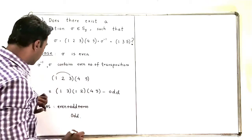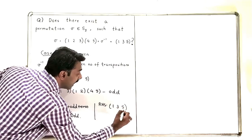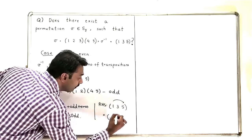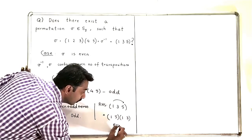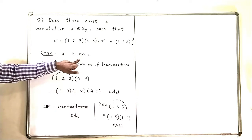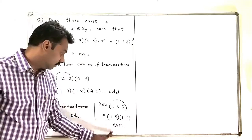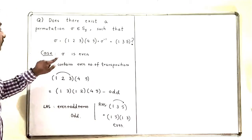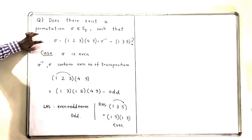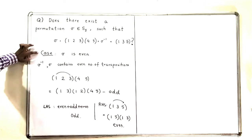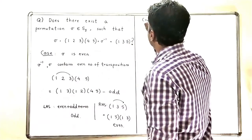Now looking at the right-hand side, (1 3 5) can be written as (1 5)∘(1 3), which uses two transpositions — so it is an even permutation. This means if σ is even, the left-hand side is odd but the right-hand side is even, which is a contradiction. Therefore, σ being even is not possible.